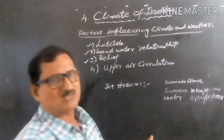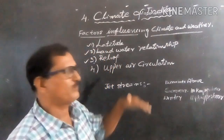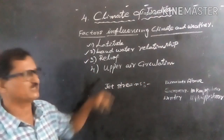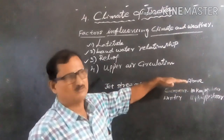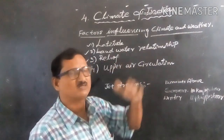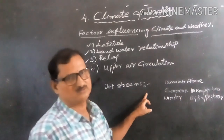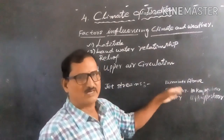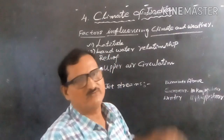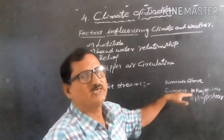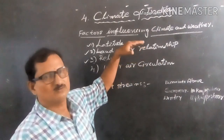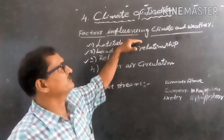The Indian climate is also affected by upper air circulation currents. Above 12,000 meters of atmosphere, in a narrow belt, there are fast-flowing currents called jet streams. During summer these currents flow fast, whereas during winter their speed is around 184 kilometers per hour. These jet streams also affect the nature and tendency of the atmospheric condition.